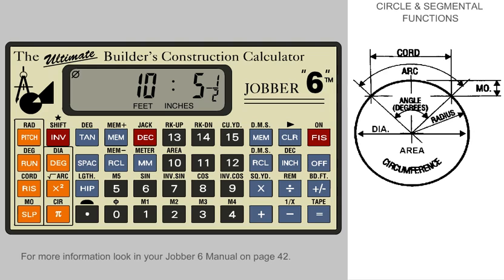Now, enter the middle ordinate, which is 1 foot 2 inches. Press the MO key to tell the calculator this is the middle ordinate. Now, we would like to know the dimensions or values for the other parts of the circle. Ask for the radius. Ask for the arc. Ask for the degree. Note, the degree key used in the circle mode is the run key, with D-E-G written above it.